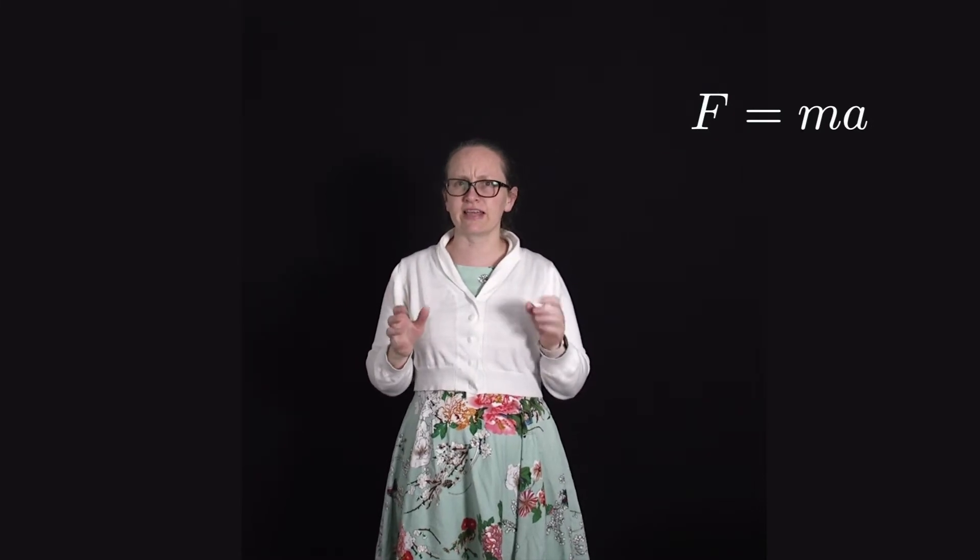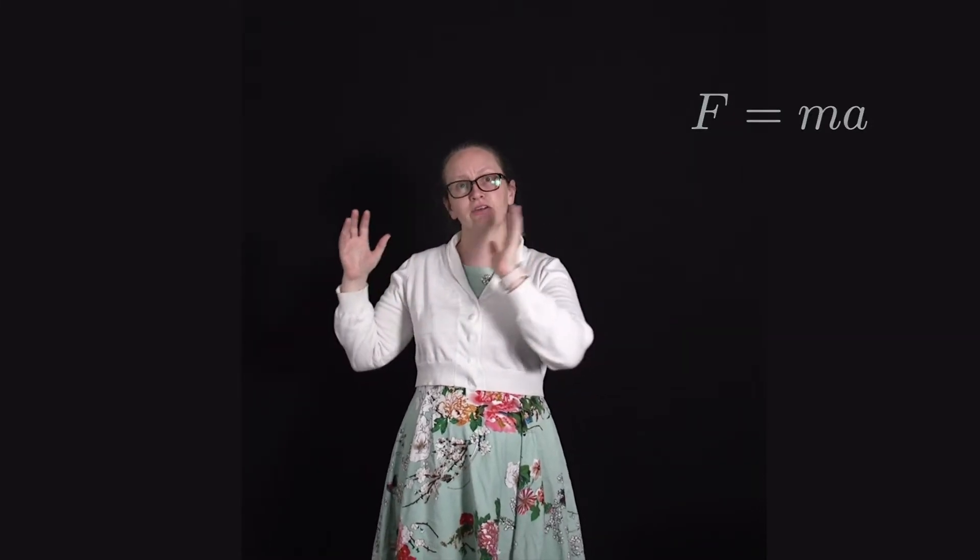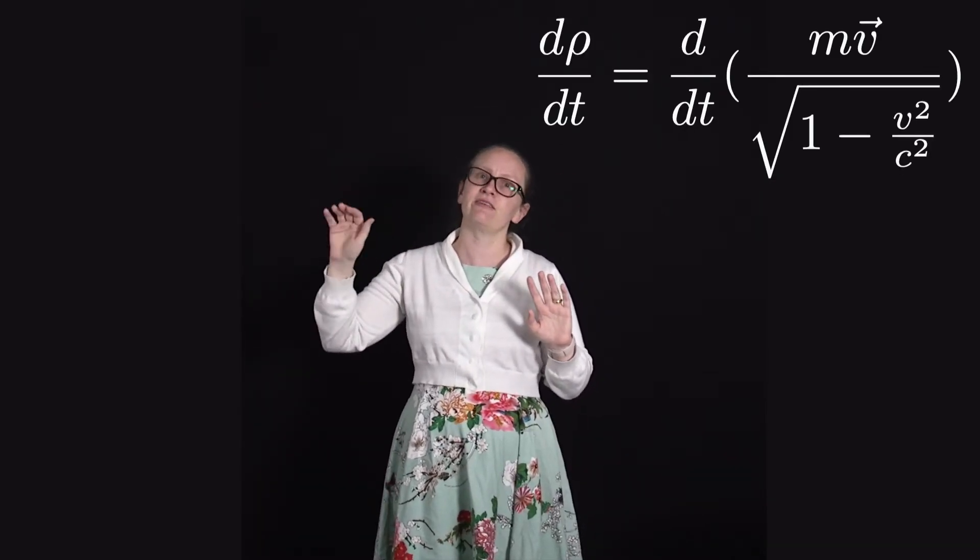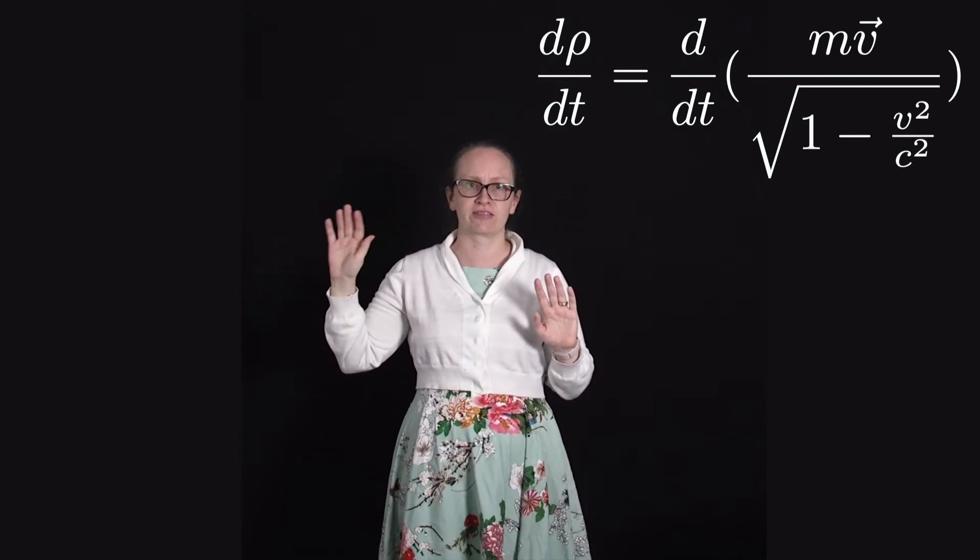Now in the relativistic case if we imagine applying a constant force, we've now got that the force is equal to d/dt of mv divided by the square root of 1 minus v squared over c squared.